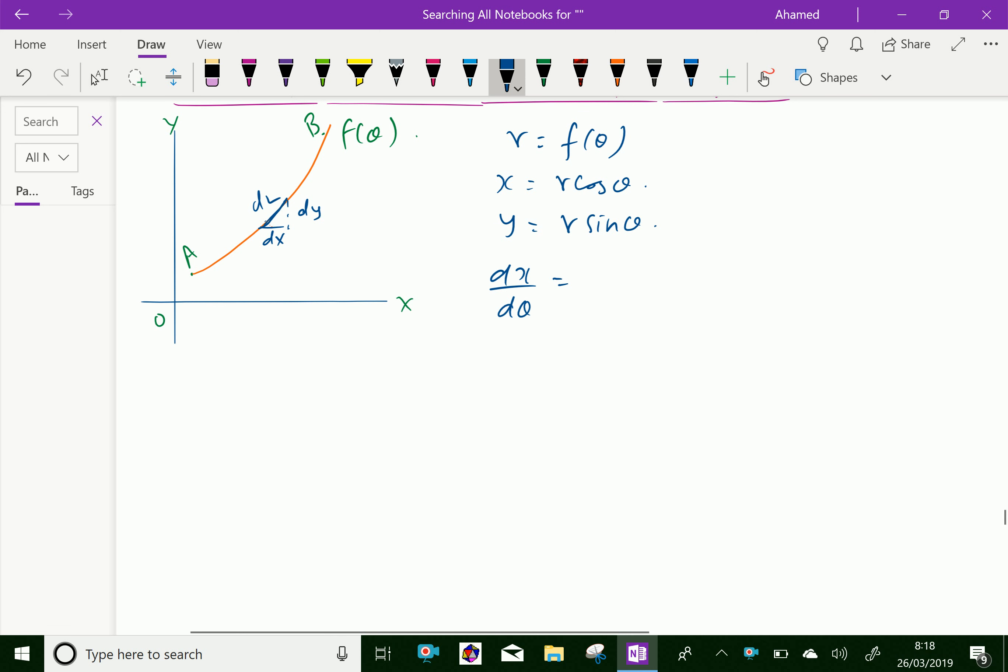Then the remaining terms: r dash square common gives r dash square times cos square theta plus sin square theta, plus r square common gives r square times sin square theta plus cos square theta.